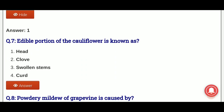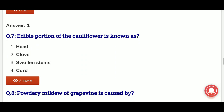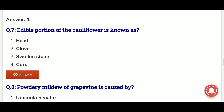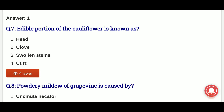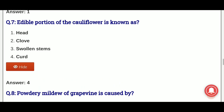Seventh question: edible portion of cauliflower is known as? What is the edible portion of cauliflower called? The options are: head, clove, swollen stems, curd. And the answer is option 4, that is curd.